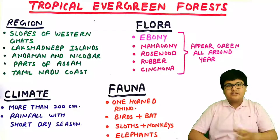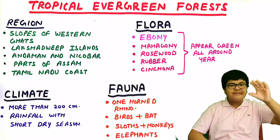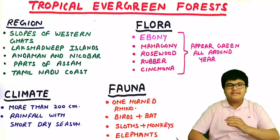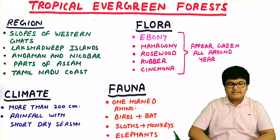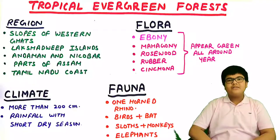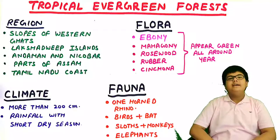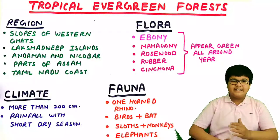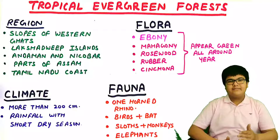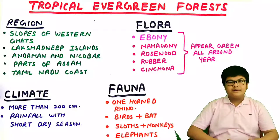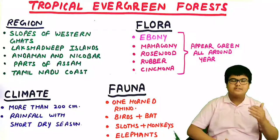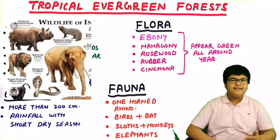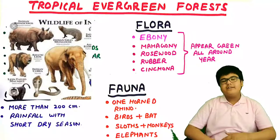These forests are so dense that they form a canopy with various layers. Because not all trees shed leaves at the same time, the forests appear green throughout the year — hence the name evergreen forests. Animals found here include the one-horned rhinoceros in the jungles of Assam and West Bengal, as well as sloths, monkeys, elephants, and diverse bird species.